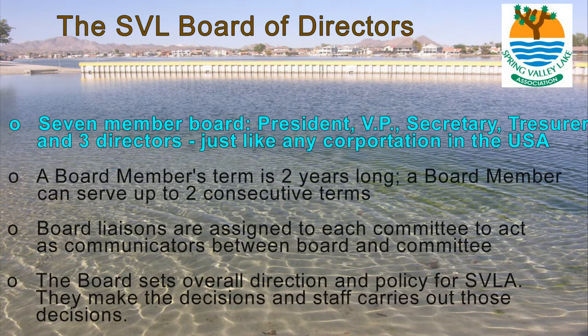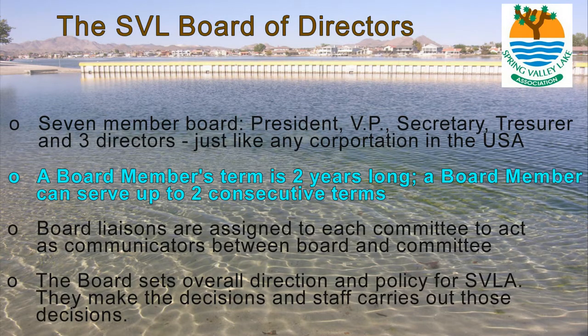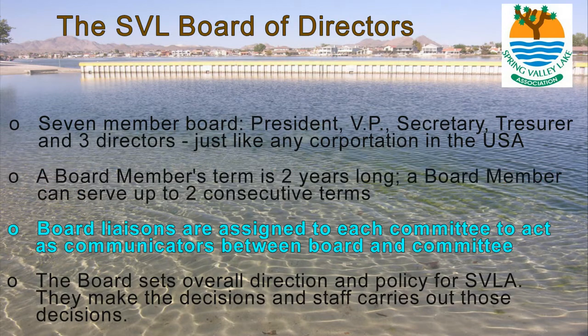Our HOA is governed by a seven-member board of directors. Just like any other corporation in the United States, there is a president, vice president, secretary, and a treasurer. Each board member has a term of two years and can serve two consecutive terms before being termed out. Each board member is assigned to serve as a liaison to the committees, acting as a line of communication between the board and the committee, keeping the board updated with the committee's current work.